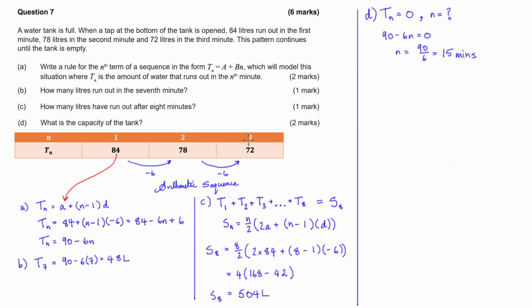So to work out the capacity of the tank, what we have to then solve is the total amount of litres that have run out, like we did in part C, after 15 minutes, rather than after 8 minutes. So rather than writing t_15, I can write S_15. So S_15, we're going to use this formula down here, is going to equal 15 divided by 2 times (2 times our first term of 84 plus n, which is 15, take 1 times our common difference).